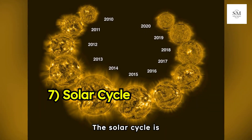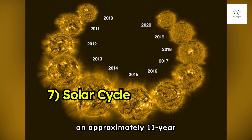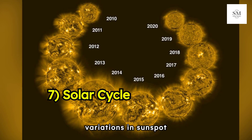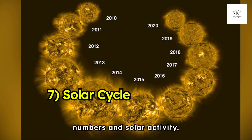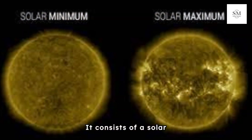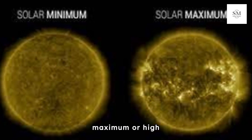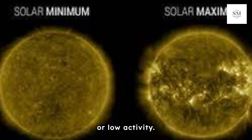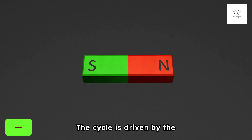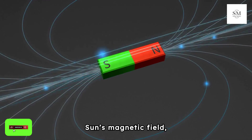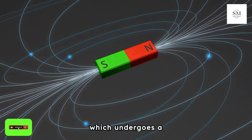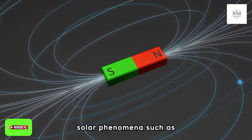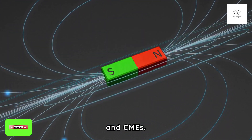The solar cycle is an approximately 11-year cycle marked by variations in sunspot numbers and solar activity. It consists of a solar maximum, or high activity, and a solar minimum, or low activity. The cycle is driven by the Sun's magnetic field, which undergoes a periodic reversal, affecting solar phenomena such as sunspots, flares, and CMEs.